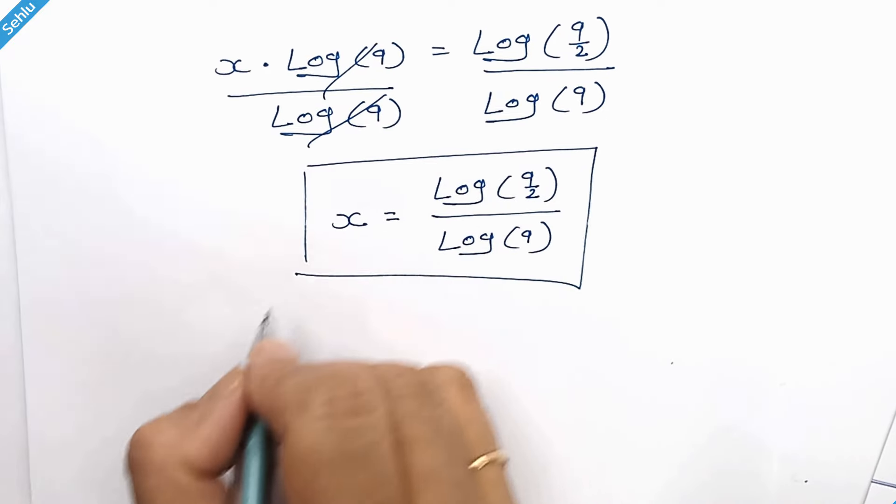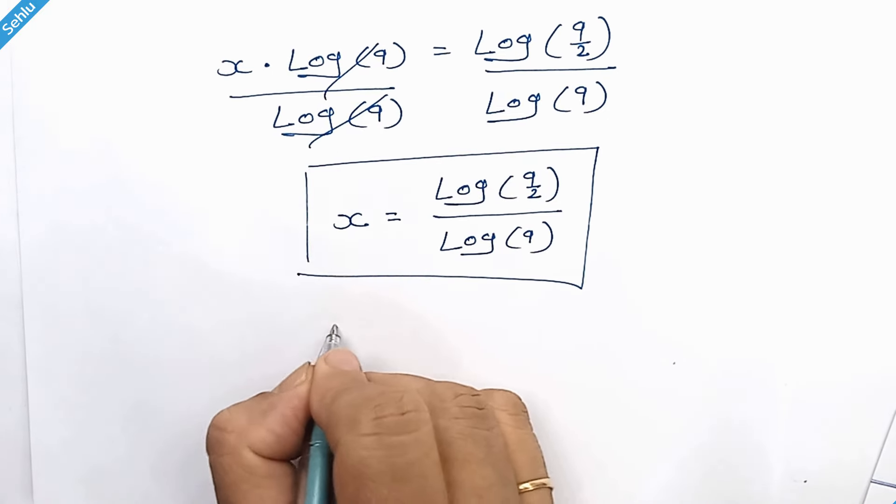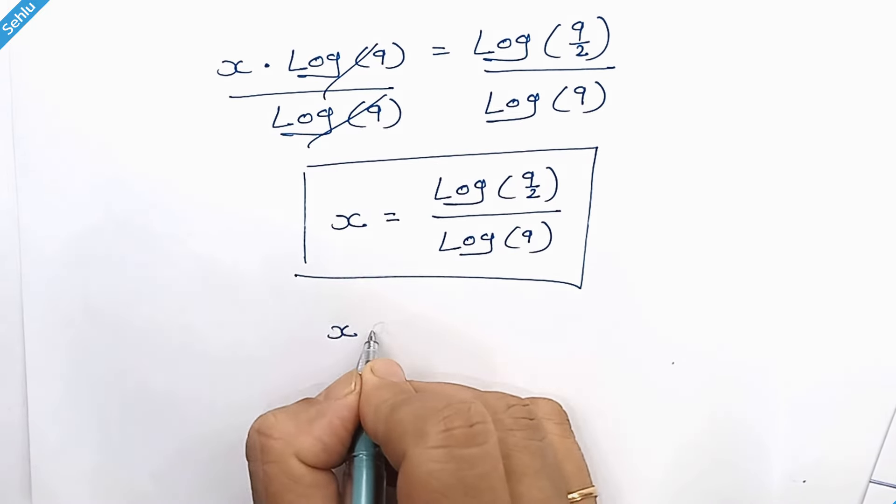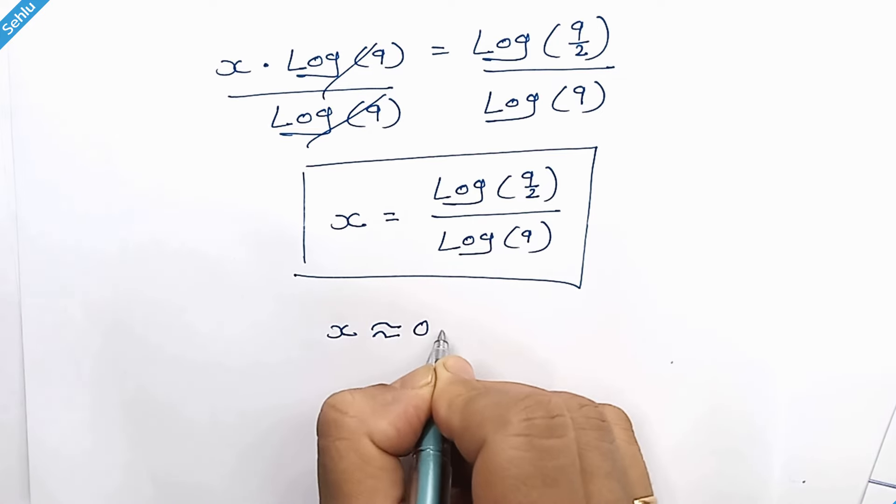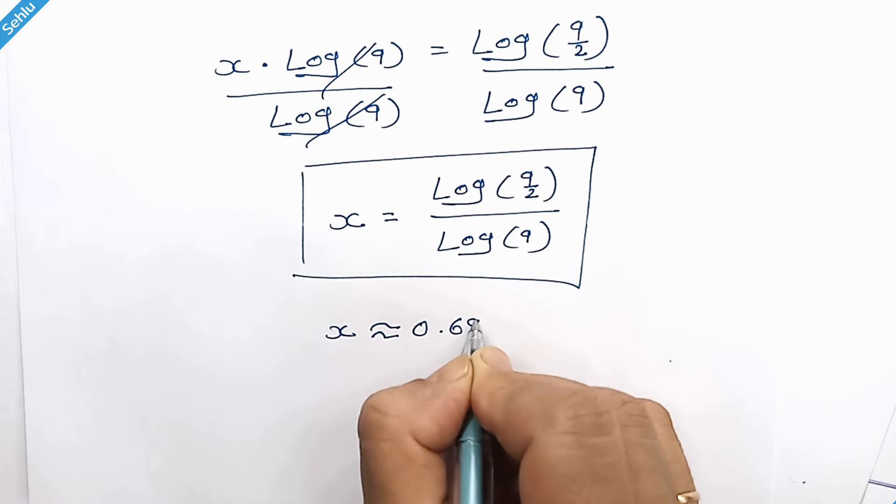And this is the answer. If we move a little further, the approximate value of x is 0.684.